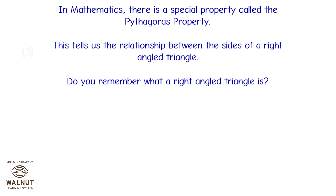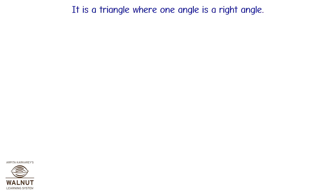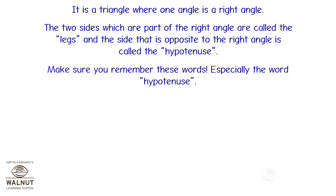Do you remember what a right-angled triangle is? Triangle ABC is a right-angled triangle — it is a triangle where one angle is a right angle. The two sides which are part of the right angle are called the legs, and the side opposite to the right angle is called the hypotenuse. Make sure you remember these words, especially the word hypotenuse.